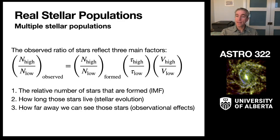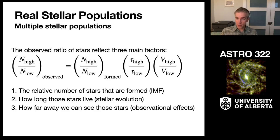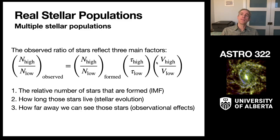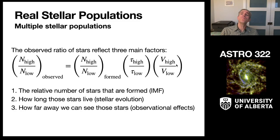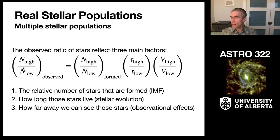The final factor is the volume over which we see high-mass stars relative to low-mass stars. This comes from observational completeness — because of the mass-luminosity relationship, high-mass stars are very bright and we can see them over very large distances. Because it's a volume, it scales like distance cubed. So while the IMF is steep and decreasing and high-mass star lifetimes are short, the fact that we can see them over a much wider volume allows us to still observe lots of high-mass stars.